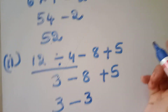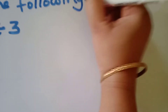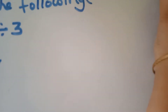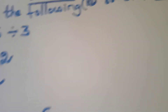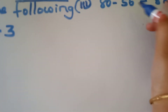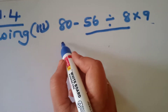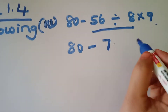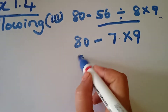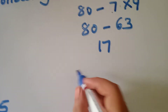Next, third one: 80 minus 56 is divided by 8 into 9. First, take the division quantity: 56 divided by 8. 80 minus 8, that is 7. So division quantity gives 7, then 8 into 7 nines are 63. 80 minus 63 equals 17, which is the answer.